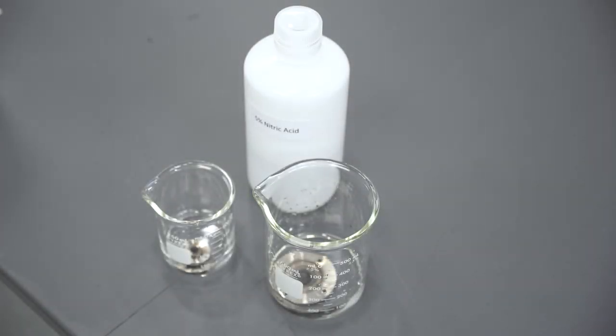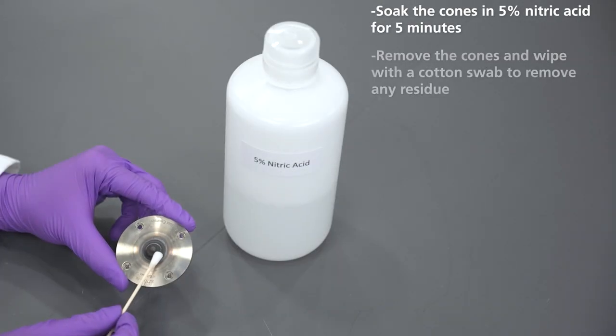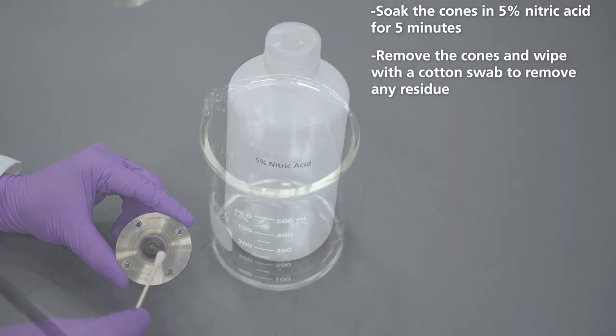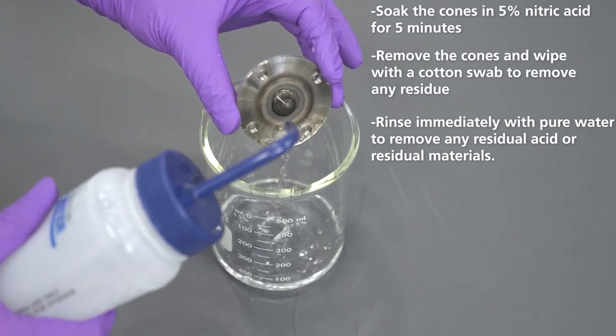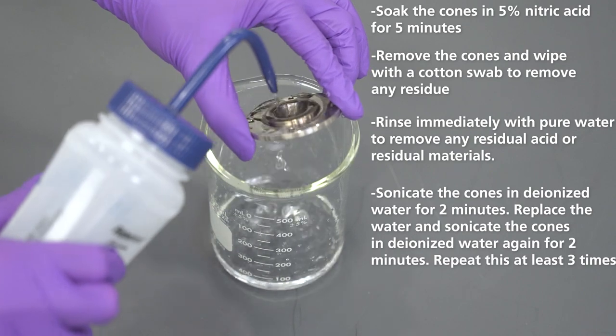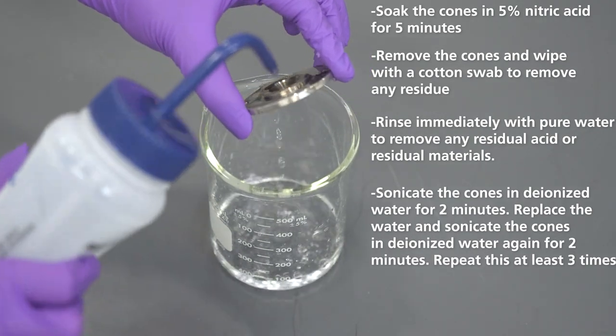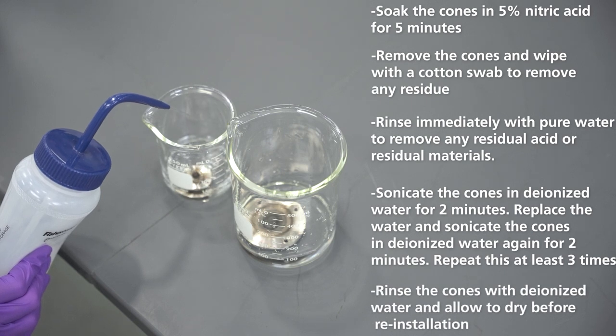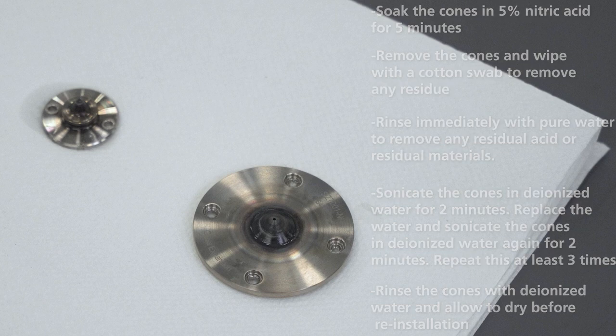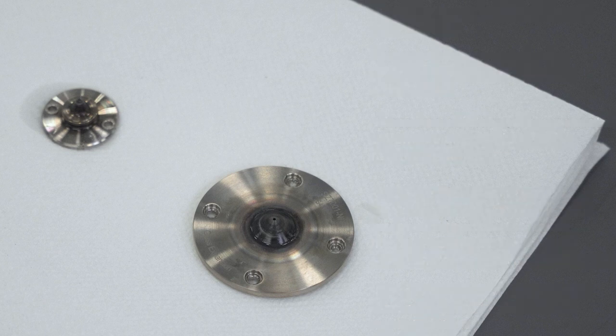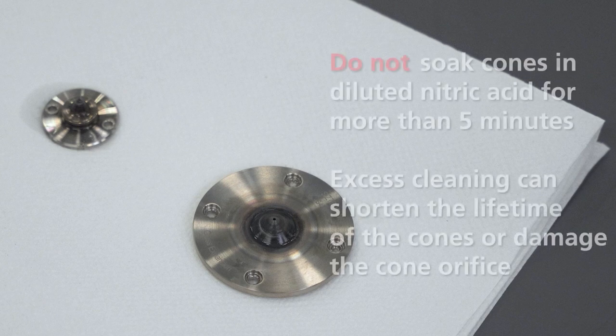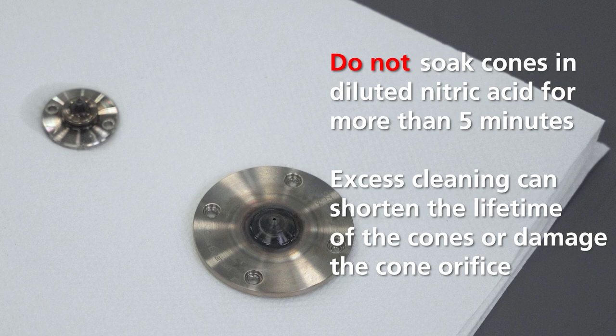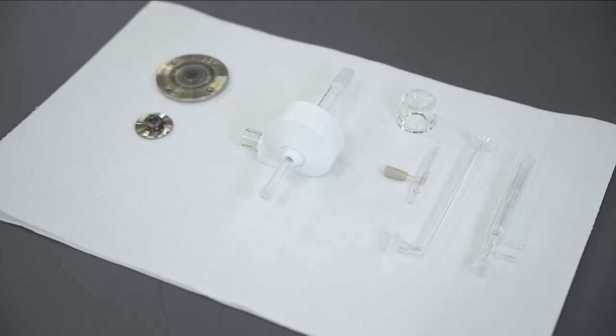For severe deposit, first rinse the cones with pure water. Then soak the cones in 5% nitric acid for 5 minutes. Remove the cones and wipe with a cotton swab to remove any residue. Rinse immediately with pure water to remove any residual acid or residual materials. Sonicate the cones in deionized water for 2 minutes. Replace the water and sonicate the cones in deionized water again for 2 minutes. Repeat this at least 3 times. Rinse the cones with deionized water and allow to dry before reinstallation. Please note that the cleaning process does not necessarily need to reproduce the original as-new polished appearance. Do not soak the cones in diluted nitric acid for more than 5 minutes. Excess cleaning can shorten the lifetime of the cones or damage the cone orifice.